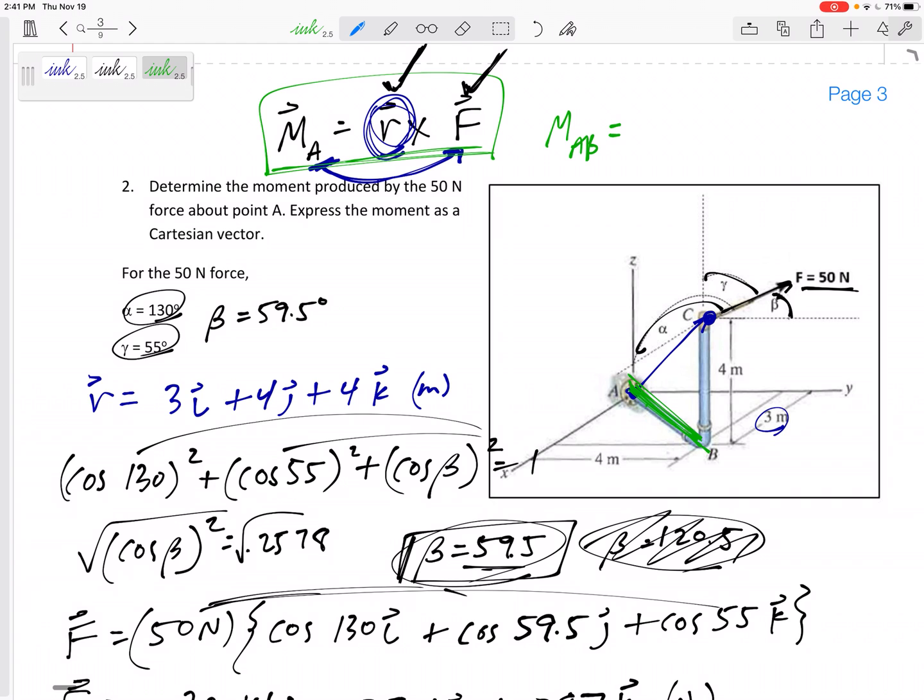If this was the moment about the AB axis, the first thing I would write down is the magnitude of the moment about the AB axis is U dot R cross F. It's U dot R cross F, where U is the U of the axis, and then similarly, R needs to go from the axis to the force, from the axis to the force.